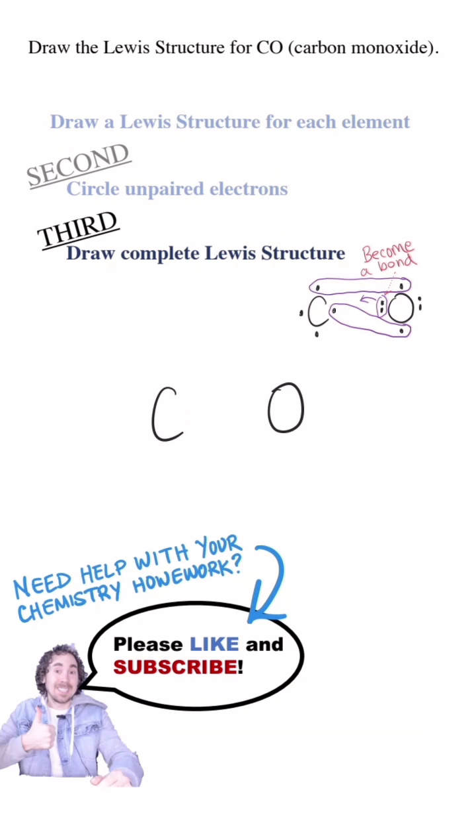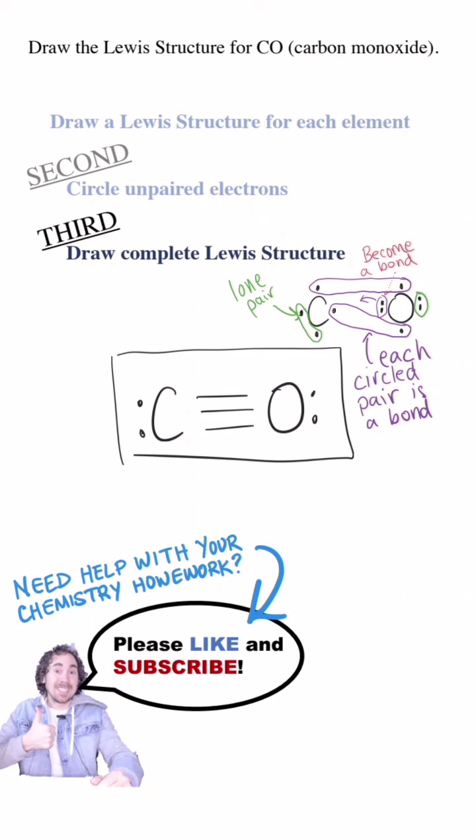Now I can draw the Lewis structure based on this rough work. The Lewis structure for carbon monoxide has a triple bond between the carbon and the oxygen, with one of the bonds coming from the oxygen atom in a coordinate covalent bond.